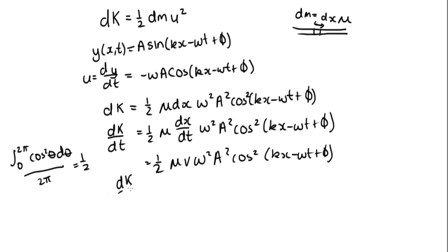So the average dK/dt equals (1/2)(1/2) = (1/4) μ v ω² A². This is the energy transmitted as kinetic energy. However, the string also has potential energy. In simple harmonic motion, energy converts between kinetic and potential energy, and on average...